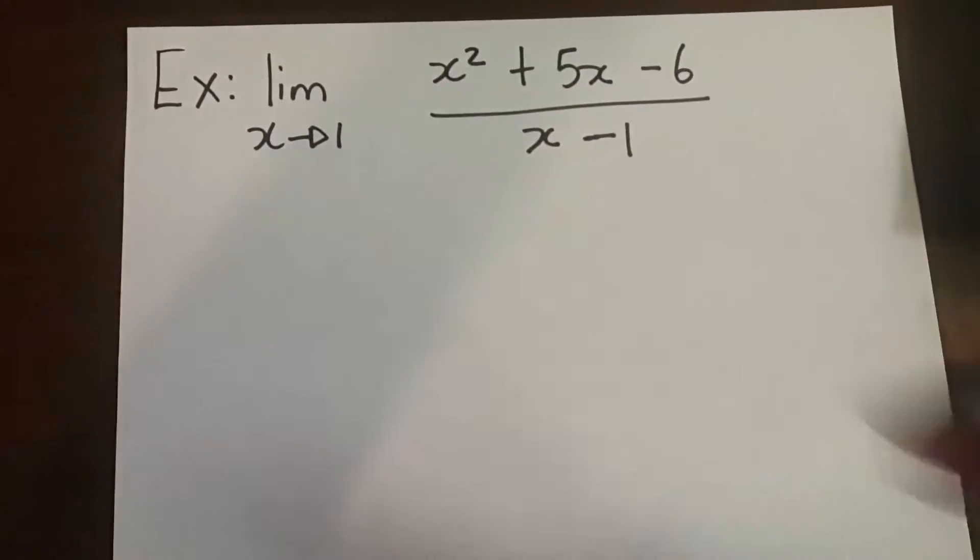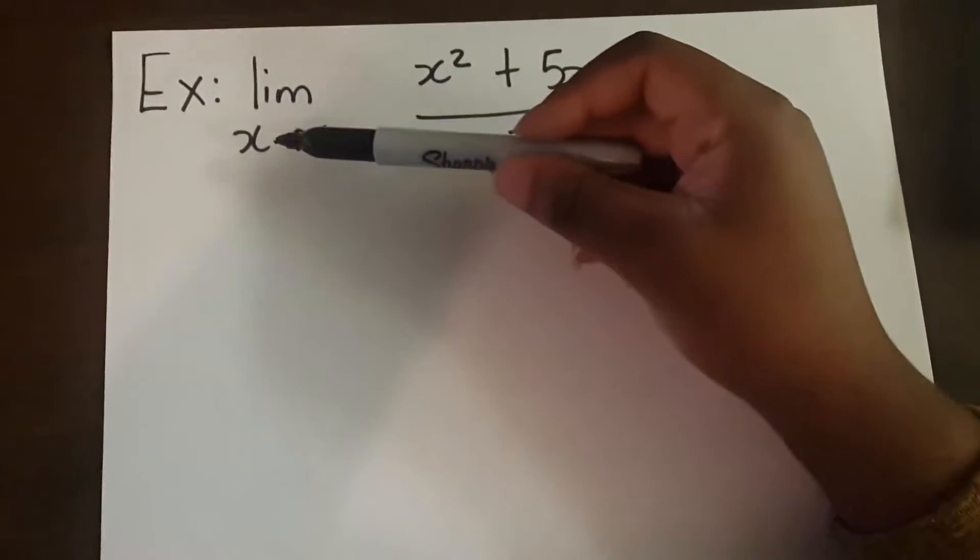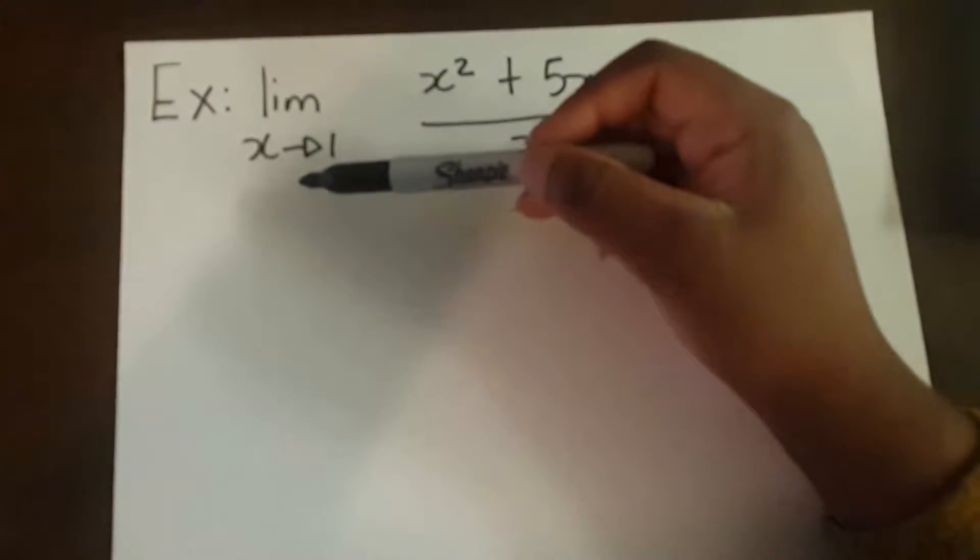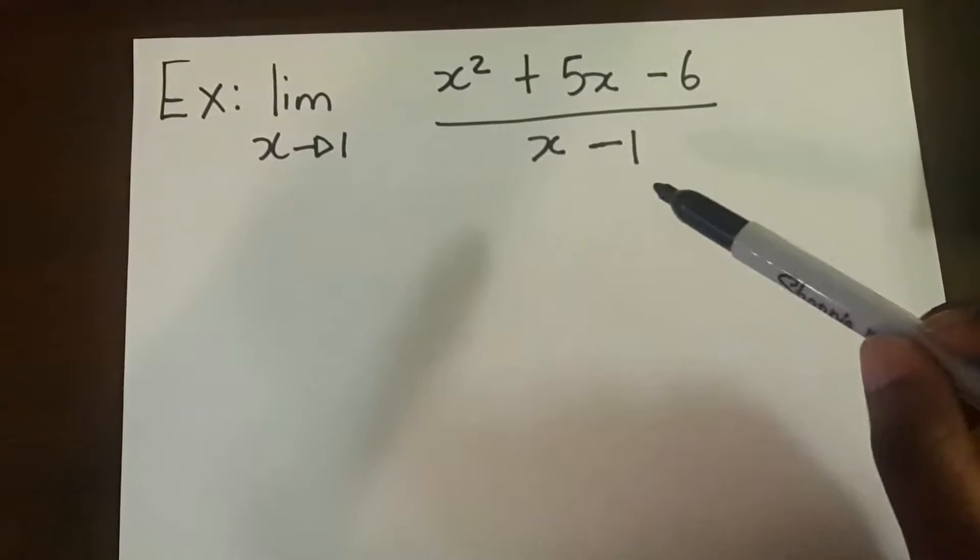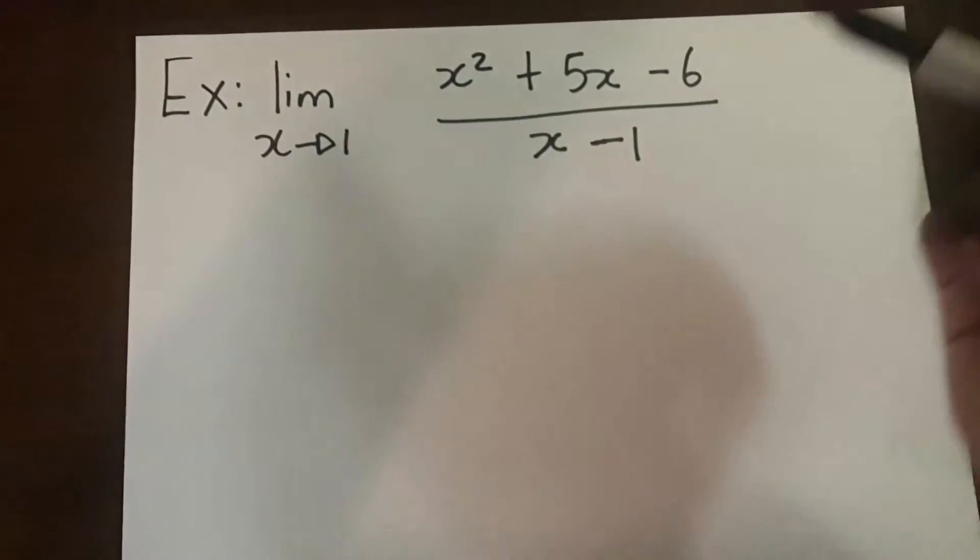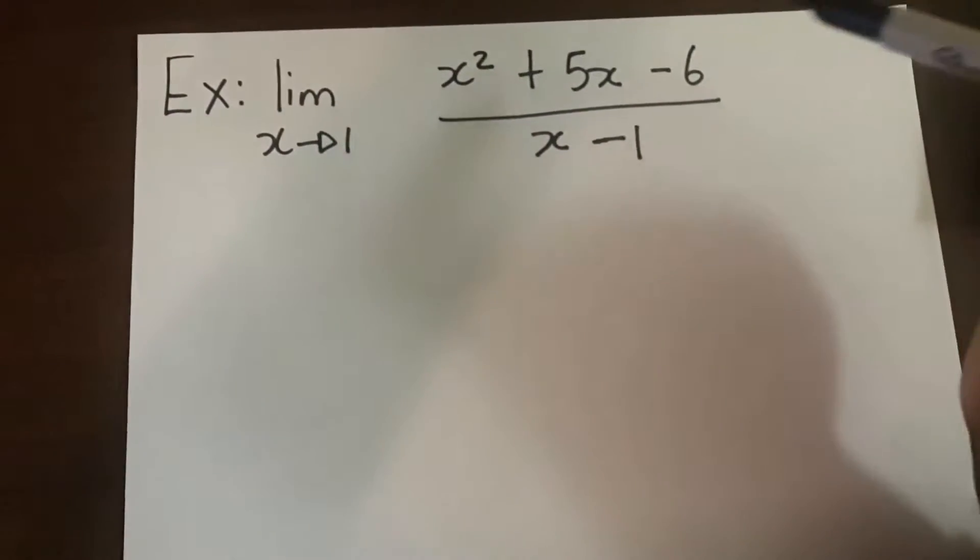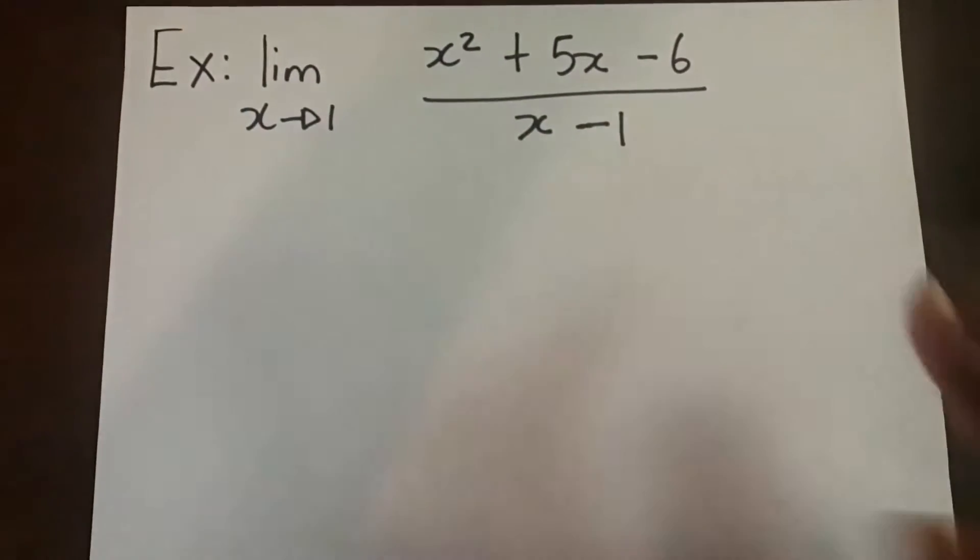So let's do the first example. The first example is limit as x approaches 1 of x squared plus 5x minus 6 over x minus 1. So when you look at the top, you recognize that you're given a polynomial.